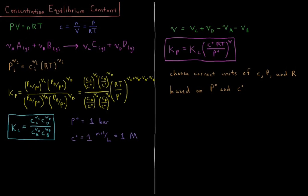We define the quantity ν (nu) as the change in the number of moles of gas: ν = νC + νD − νA − νB, the sum of product stoichiometric coefficients minus the sum of reactant coefficients. Our equilibrium constant in terms of pressure equals our equilibrium constant in terms of concentration times (C0·RT/P0) all raised to the power ν: Kp = Kc·(C0·RT/P0)^ν.